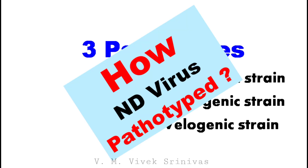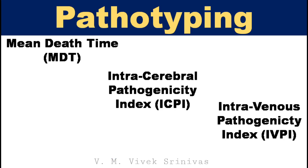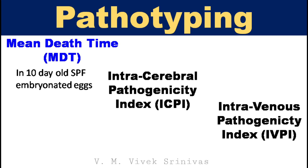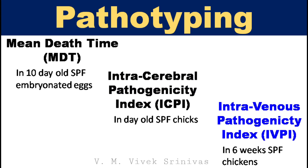How are they pathotyped? Generally, they are pathotyped using any one of the following laboratory methods. Number 1: Mean death time — the virus is injected into 10-day-old specific pathogen-free embryonated eggs and their mean death time is analyzed. Number 2: Intracerebral pathogenicity index — the most commonly used method, where the virus is injected into a day-old specific pathogen-free chick and their pathogenicity index is analyzed. Number 3: Intravenous pathogenicity index — the virus is injected into 6-week-old specific pathogen-free chickens and their pathogenicity index is analyzed.